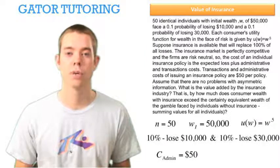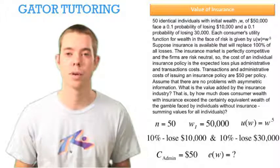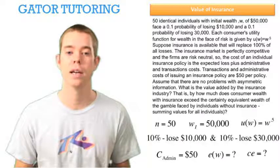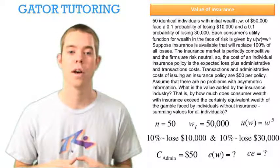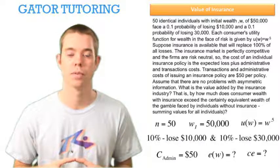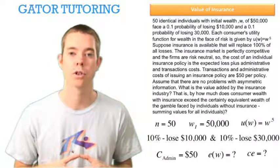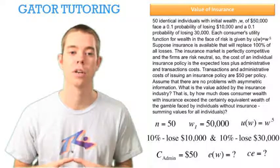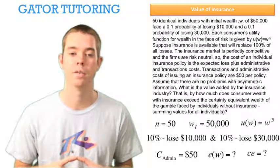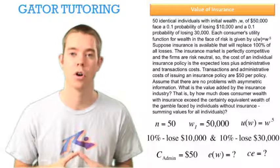The administration cost is equal to $50. We're looking for the expected wealth first, and we're looking for the certainty equivalent, because we need to answer the question: what is the value added by the insurance industry? That is, by how much does consumer wealth with insurance exceed the certainty equivalent of wealth of the gamble faced by individuals without insurance, summing values for all individuals?